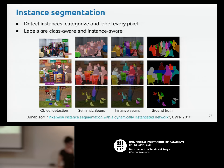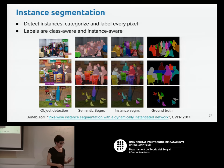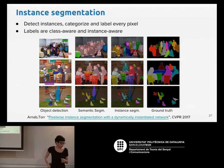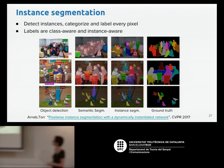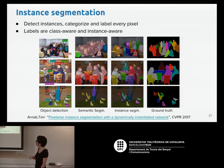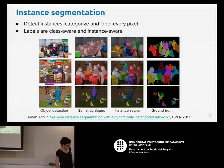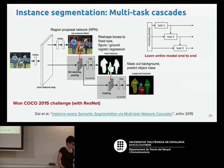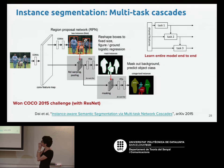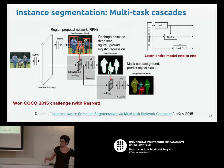That covers the semantic segmentation problem. Now, very briefly, for the other task — instance segmentation — the goal is to label each pixel taking into account different instances of the same class. Basically all solutions for this task are based on the solutions proposed for the object detection task, the ones seen previously.